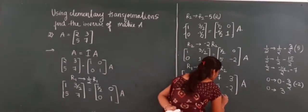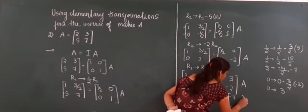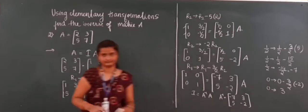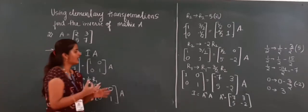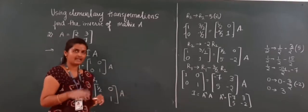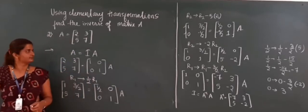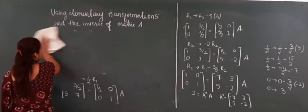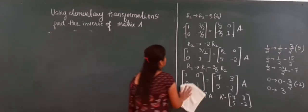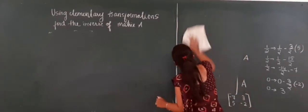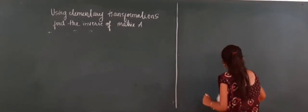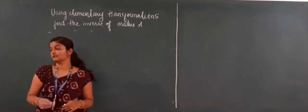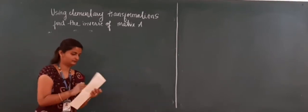So what is our A inverse? A inverse is equal to the matrix: -7, 3, 5, -2. You can check whether our answer is correct by multiplying A and A inverse — if you get the identity matrix I, then your answer is correct. You can try. Next I will take another problem. Please you also try.